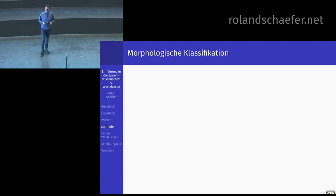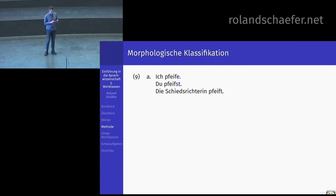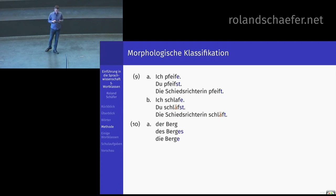Wie geht das jetzt richtig? Morphologische Klassifikation ist eine Möglichkeit. Ich pfeife, du pfeifst, die Schiedsrichterin pfeift – dreimal Formen des Verbs pfeifen. Ich schlafe, du schläfst, die Schiedsrichterin schläft – drei Formen von schlafen. Die bilden sich ähnlich, mit Ö, St und T, hier ist Umlaut mit drin. Der Berg des Berges, die Berge; der Mensch des Menschen, die Menschen; der Staat des Staates, die Staaten – drei Formen jeweils von einem Substantiv.